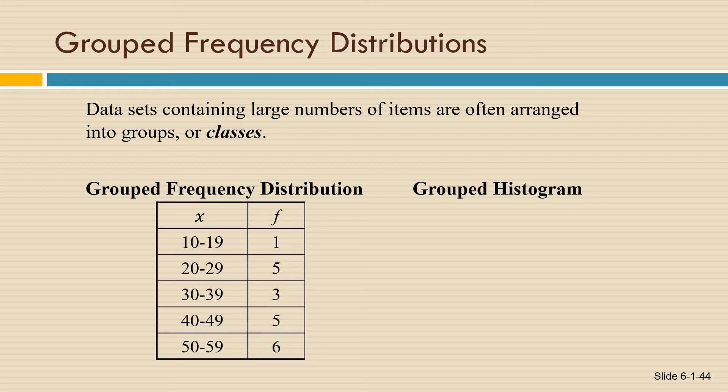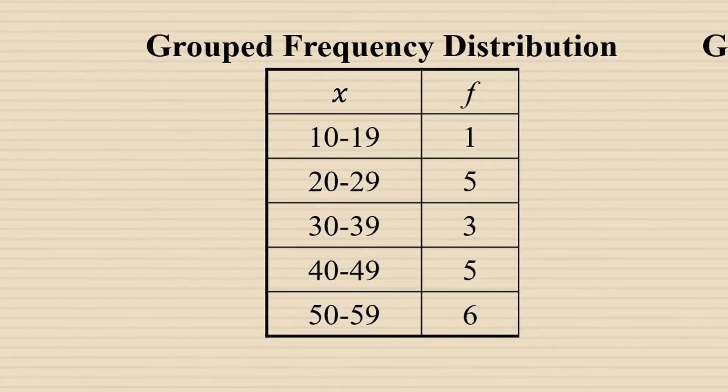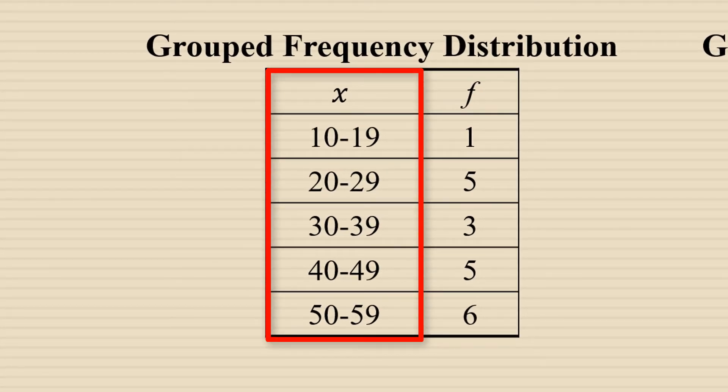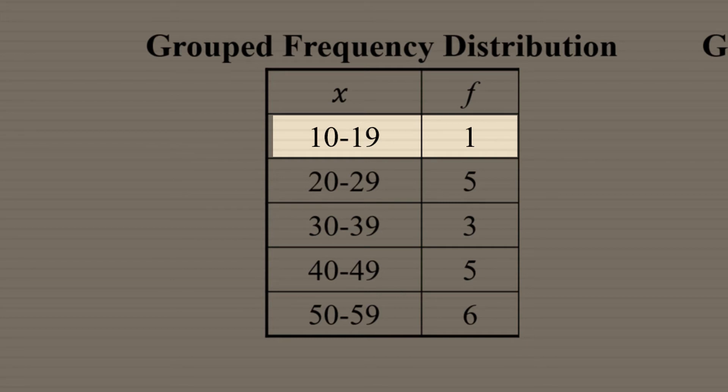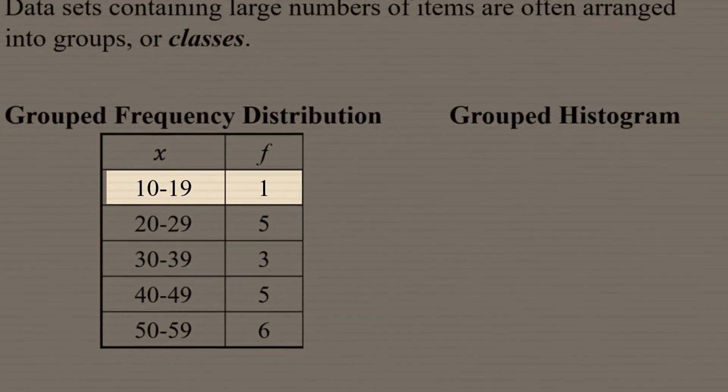So on the left, we have a grouped frequency distribution. We still have data values listed in one column, labeled with x, but it's groups of data values instead of individual data values. And then we still have the frequency column, f, which tells how many data values go into that particular class. In the first class from 10 to 19, we could have had a data value of 11 or a data value of 19, but there was one data value somewhere between 10 and 19.